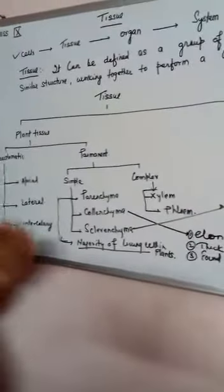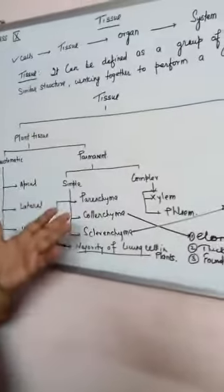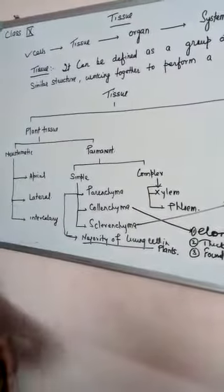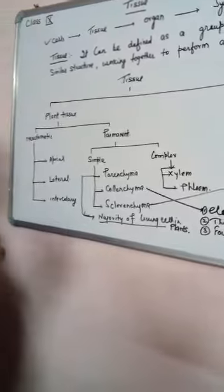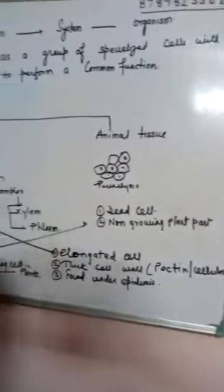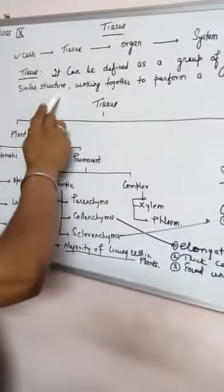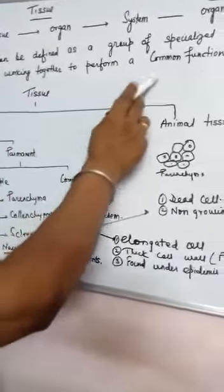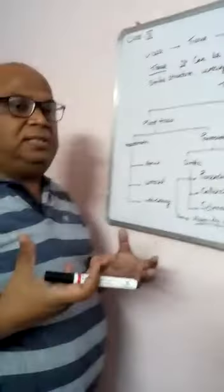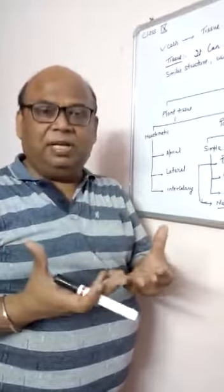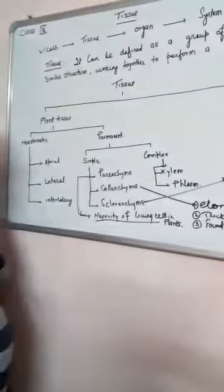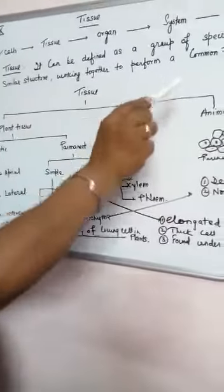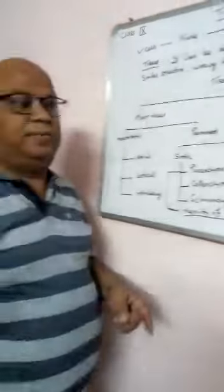In the last chapter we described about cells; now we will describe about tissue. Tissue can be defined in many ways, but one of the simplest definitions is: a group of specialized cells with a similar structure, working together to perform a common function. If you take a group of cells but their functions are not similar, we cannot call them a tissue. When cells are specialized with a similar structure and work together to perform a common function, that is called tissue.